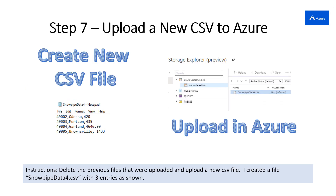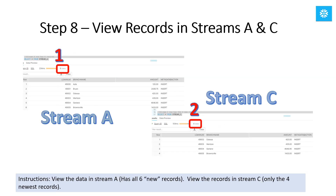We'll create another CSV file with four new records and upload that file in Azure. Running select star on stream A and stream C, you'll notice that stream C, the most recent stream created, has the four new records. Stream A has a total of six records — we shouldn't be surprised; that's what we expected.